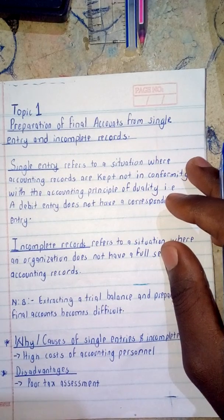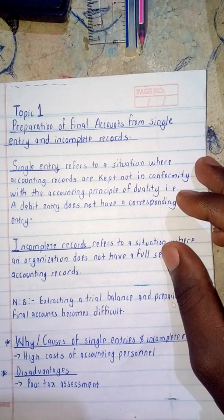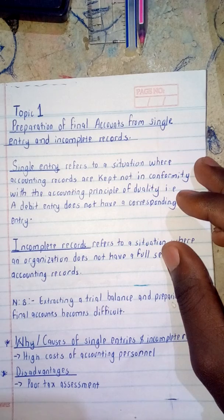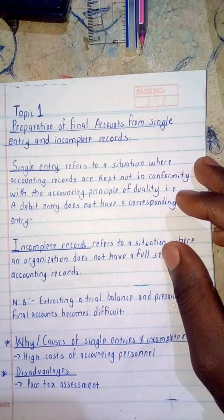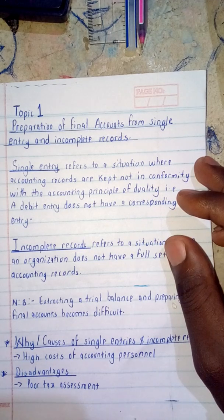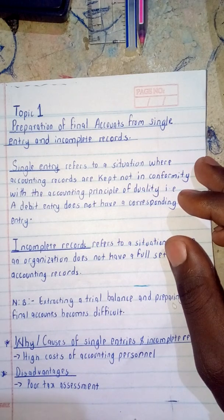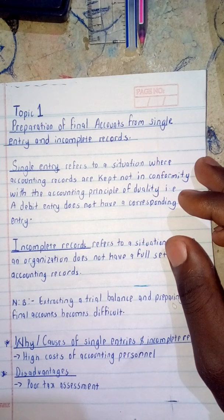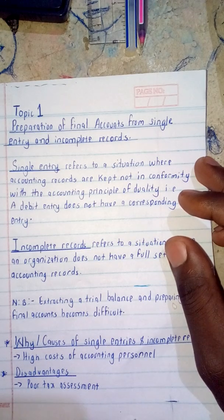Hello, my name is Jingonelli and I'm going to be taking you through Accounting Two: Preparation of Final Accounts from Single Entry and Incomplete Records. The topics covered are: Topic One - single entry and incomplete records, Topic Two - partnership accounts, Topic Three - specialized accounts, Topic Four - company accounts, and Topic Five - cash budgets and other relative budgets including forecasted financial statements and preparation and presentation of the cash flow statement.